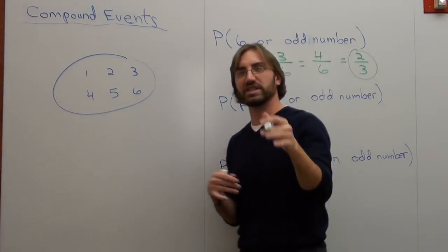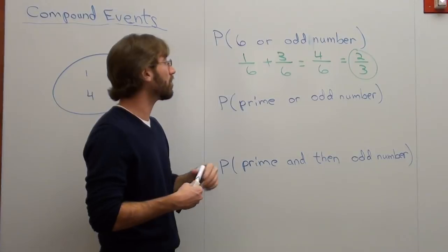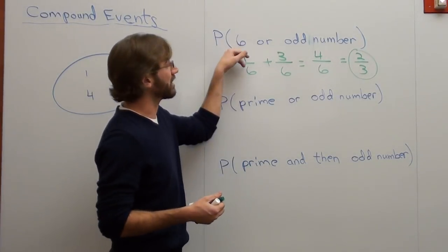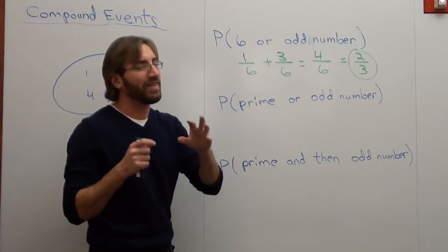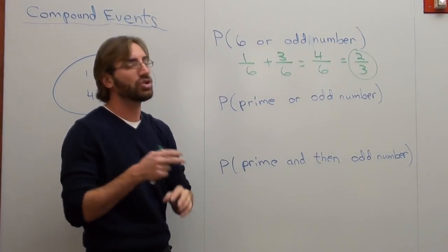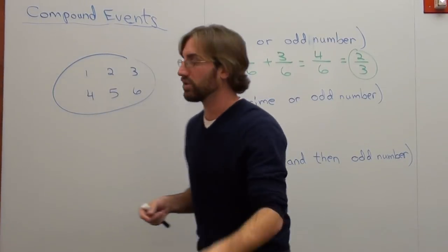Or 66.66% repeating over and over. So your probability or likelihood of rolling a 6 or an odd number is 2 thirds. You just add them together. That's a little arbitrary of a statement. It's too general. You need two examples to see the difference between them. Here's what I mean.